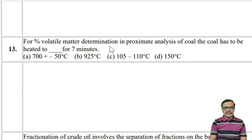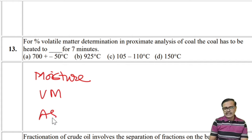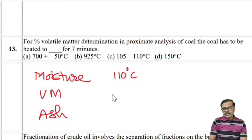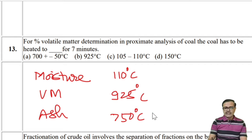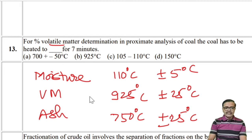For percentage volatile matter determination in proximate analysis of coal, temperatures to remember: moisture — 110°C; volatile matter — 925°C (±25°C); ash — 750°C (±25°C). The volatile matter is heated at 925°C, so 925 is the answer and the second option is correct.